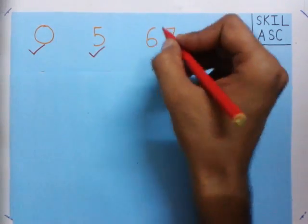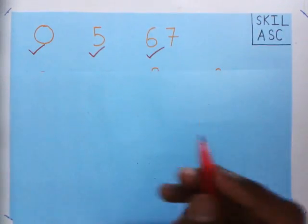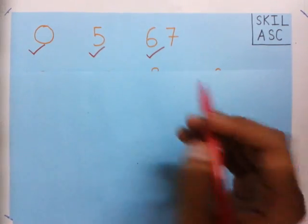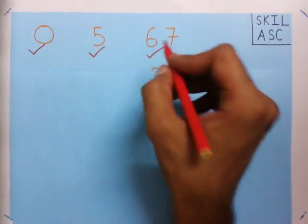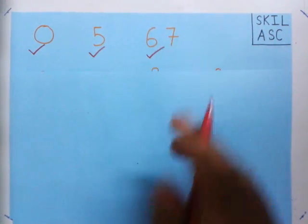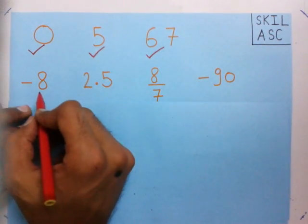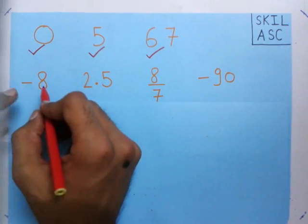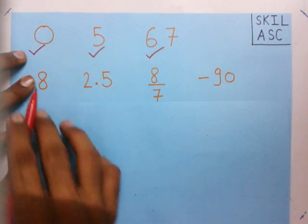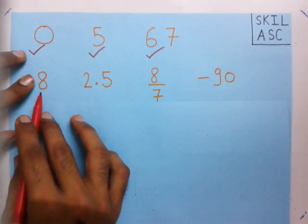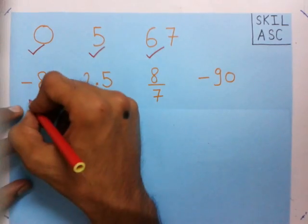Now you see 67. This number is also used while counting — if you count 1, 2, 3 and so on you will eventually get this number. So 67 is an integer. Now we see minus 8. This is the negative of a number used for counting. 8 is used for counting, and if I put a negative sign to it, it becomes minus 8. And that's why it is an integer.